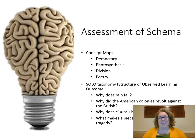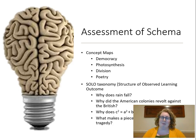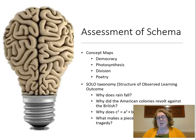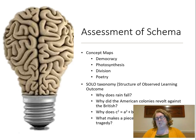We can assess schema through concept maps or through SOLO taxonomy. With concept maps, you're thinking about one concept — something like democracy, photosynthesis, division, or poetry — some big idea about which students can have complex understanding. For SOLO taxonomy, which stands for Structured Observed Learning Outcomes, you want open-ended questions, such as: why does rainfall occur, why did the American colonies revolt against the British, why does c² = a² + b² only work with right triangles, or what makes a piece of literature a Greek tragedy.